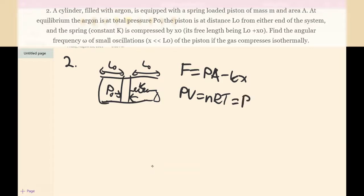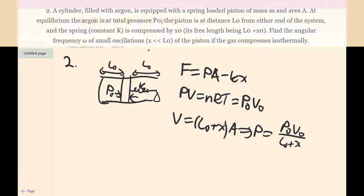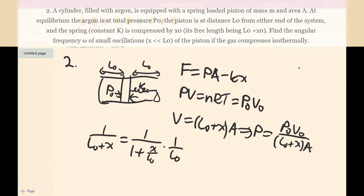So then this would just be equal to P0, which is the one at the beginning of this scenario. So then we can see that V is equal to L0 plus x times A, so that means that P is just equal to P0 over L0 plus x times A. So now we can try to approximate this. So 1 over L0 plus x can be written as 1 over (1 plus x/L0) times 1/L0, and since x is much smaller than L0, we can just approximate this part.